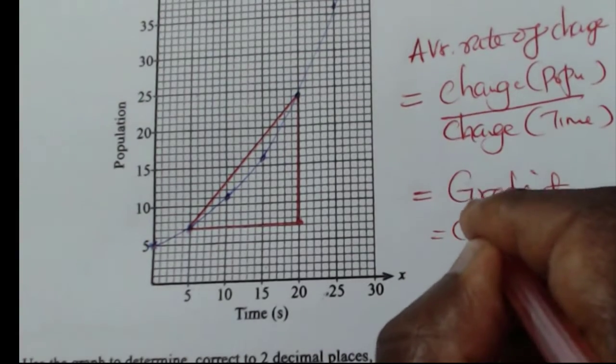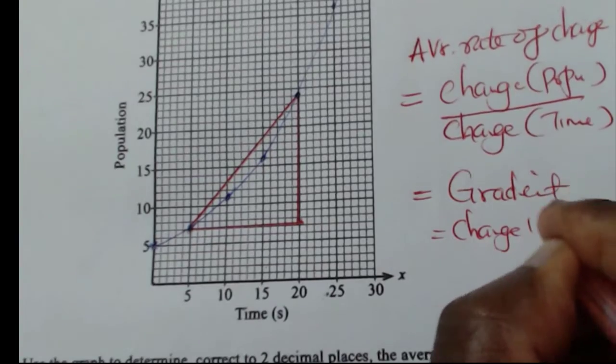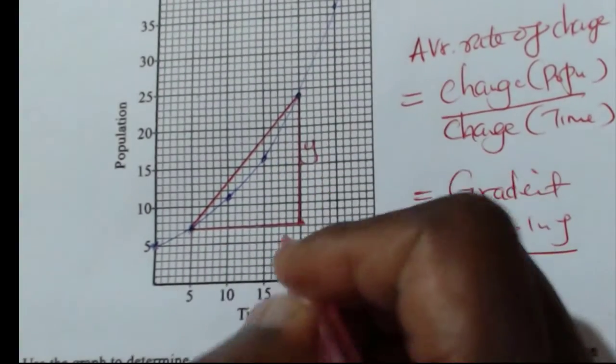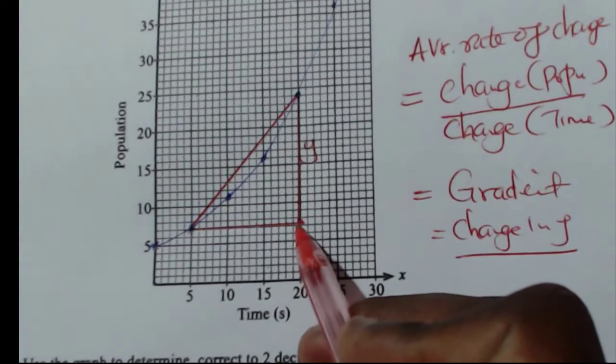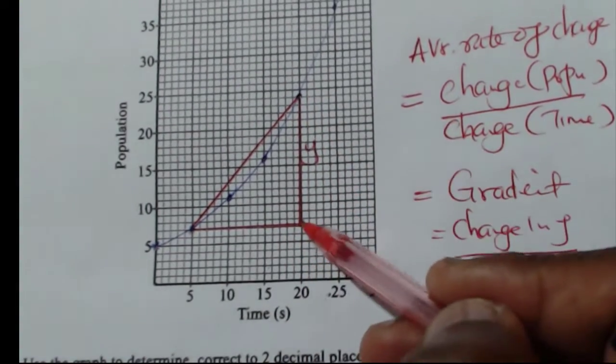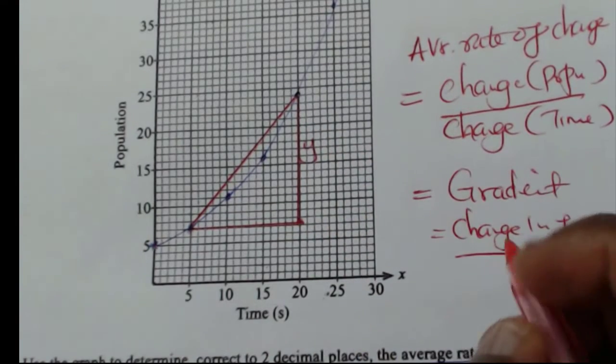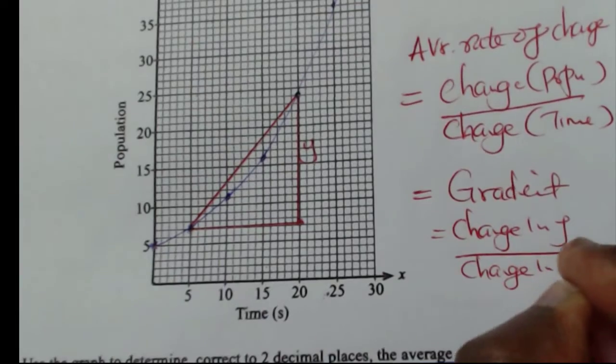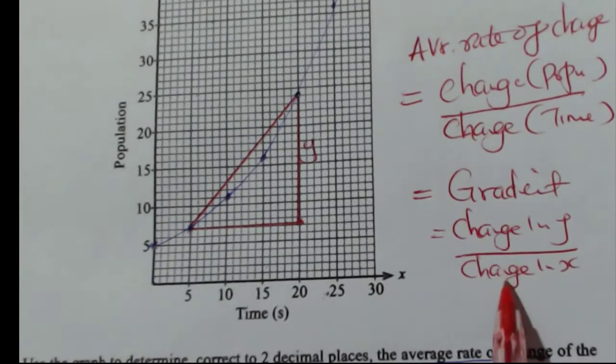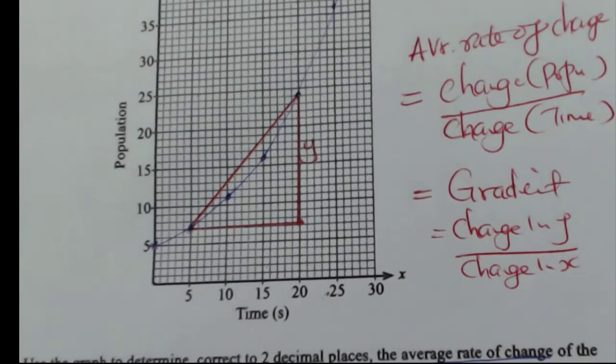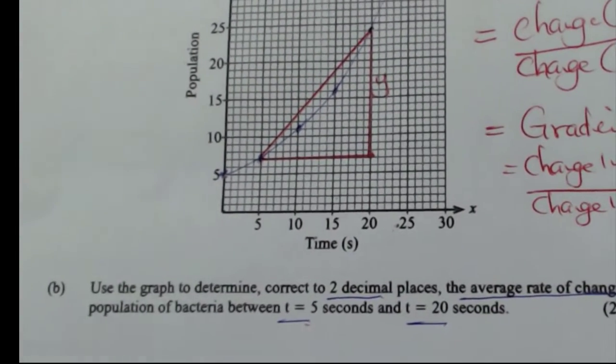The gradient of this line that you've drawn here from T equals 5 to T equals 20. And how do you get gradient? Gradient is given by change in Y, which in this case, change in Y is the change of population from this point to this point. You can see from this point to this point over the change in X. This is how you get gradient, change in X. Now, in this case, X is time from 5 to 20.